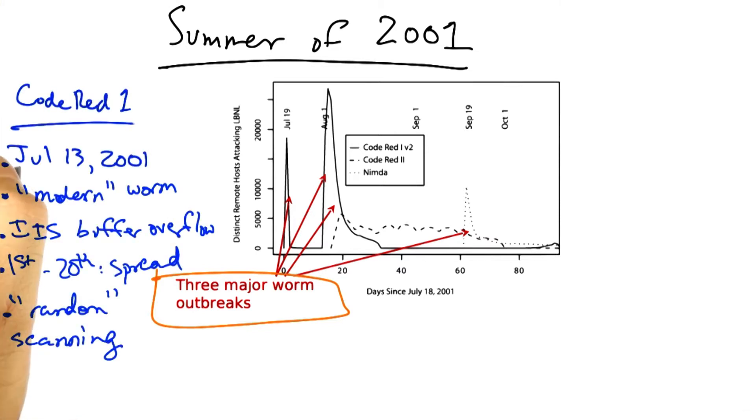Code Red 1 was released on July 13, 2001, and was the first modern worm. It exploited a buffer overflow in Microsoft's IIS server. From the 1st through the 20th of each month, it would spread by finding new targets using a random scan of IP address space.